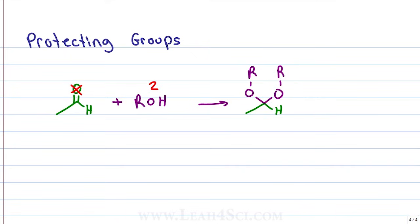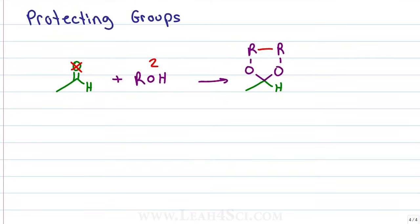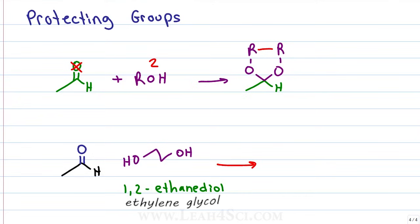But who said the R groups can't be attached to each other? What if I have a reaction where I have an alcohol and another alcohol on the same molecule? Everything else still works exactly the same. A very common protecting group that you're going to see is an aldehyde or ketone reacting with ethylene glycol. Ethylene glycol or 1,2-ethanediol is a two carbon vicinal diol meaning the alcohols are on neighboring carbons.